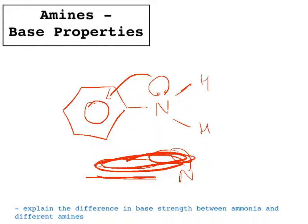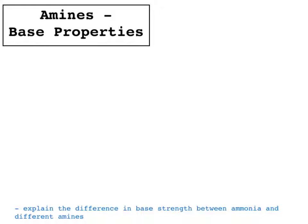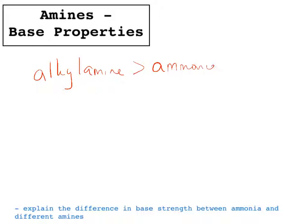To recap: an alkyl amine such as ethylamine is a stronger base than ammonia, which is a stronger base than phenylamine. Within alkyl amines, a primary amine that's accepted a proton is more stable than ammonia; a secondary amine is more stable than a primary one; but a tertiary amine becomes less stable than a secondary one because it's not very soluble in water.